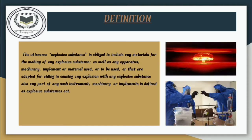This is the definition of the Explosive Substances Act given by the law: the expression 'explosive substance' is obliged to include any materials for the making of any explosive substance, as well as any apparatus, machinery, implement or material used or to be used, or that are adapted for aiding in causing any explosion with any explosive substance, and also any part of any such instrument, machinery or implements is defined under the Explosive Substances Act.